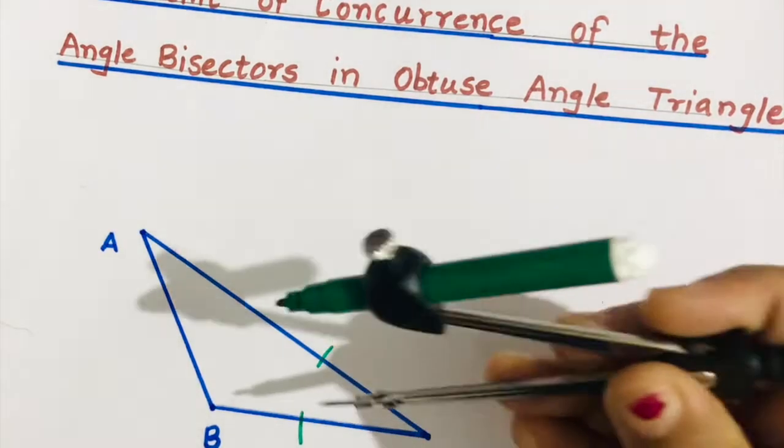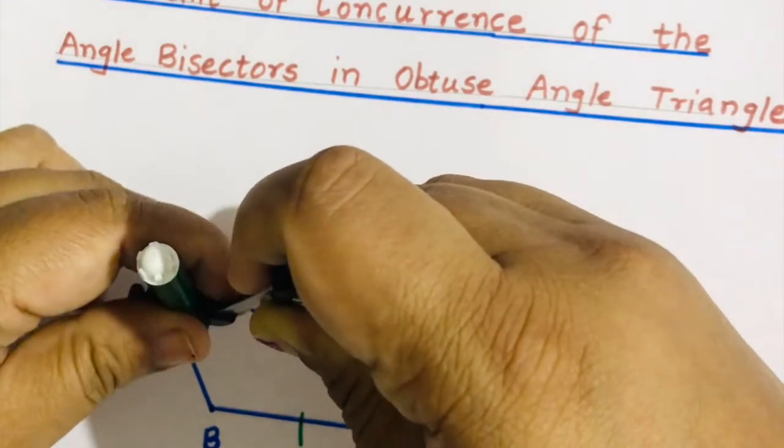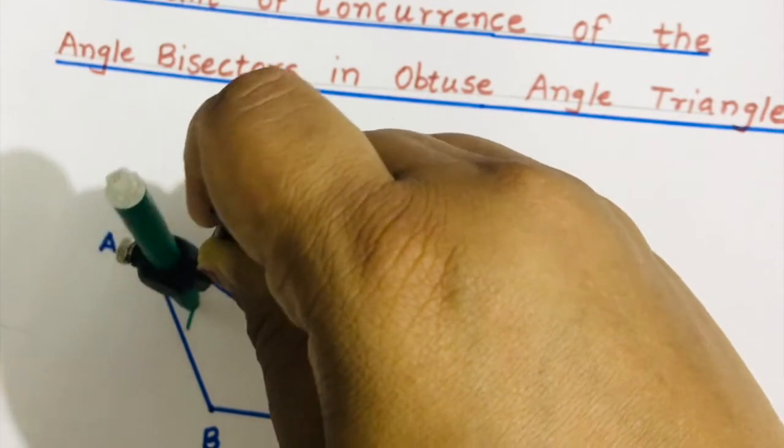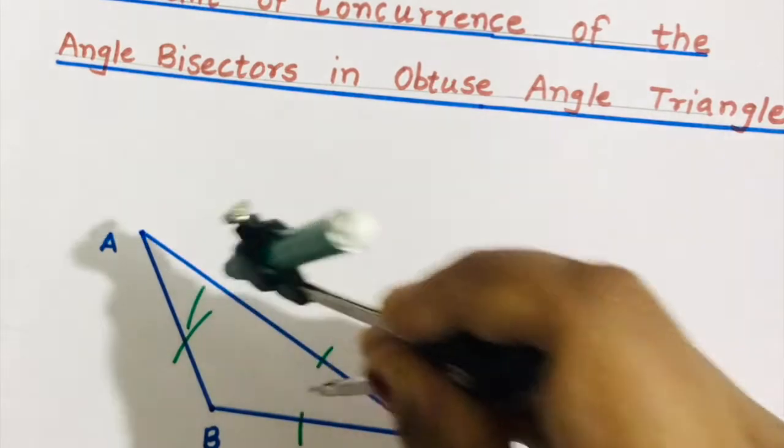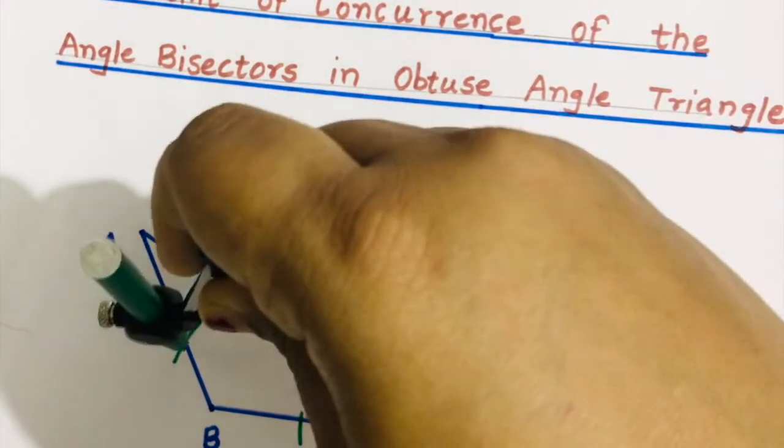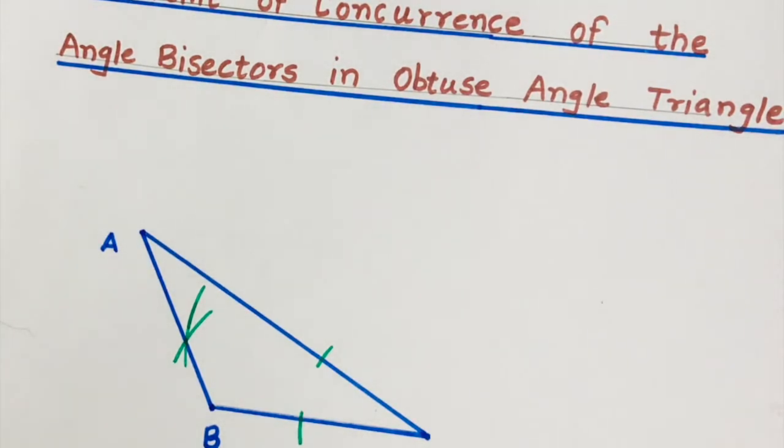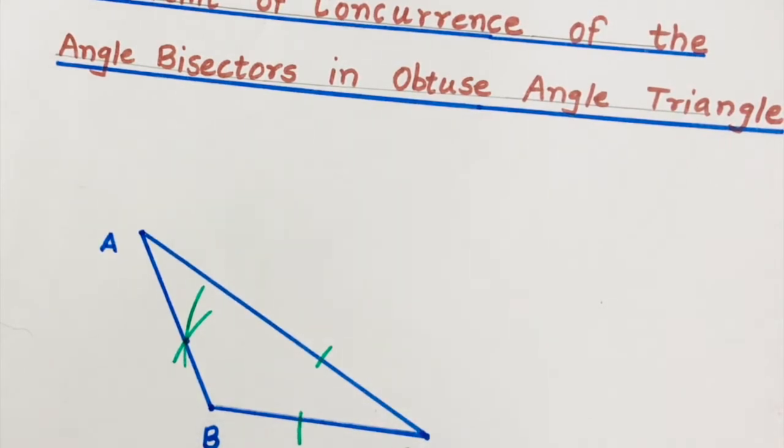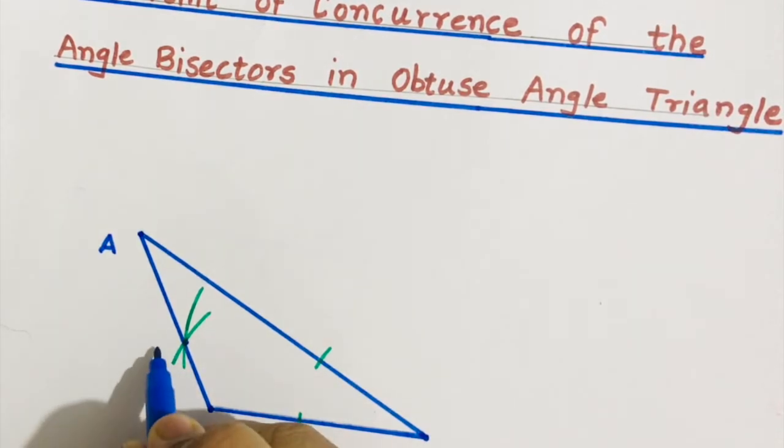Keeping the same distance, or you can extend the distance, draw again arcs. These arcs are intersecting at this point. So join C and this point. You can name this as P.